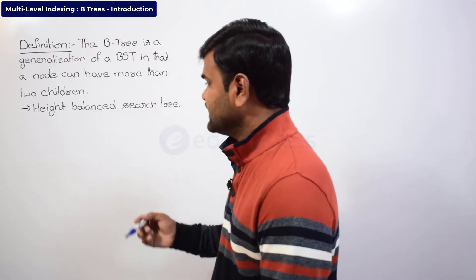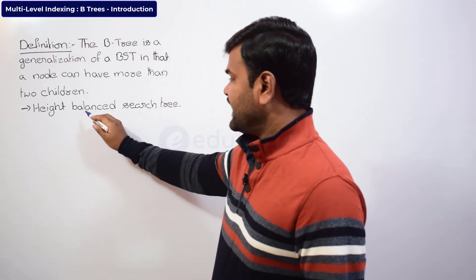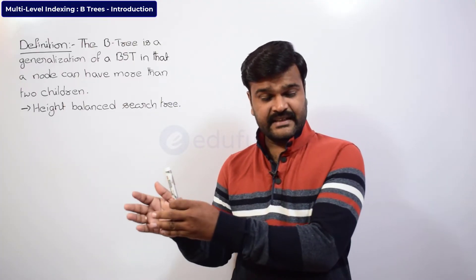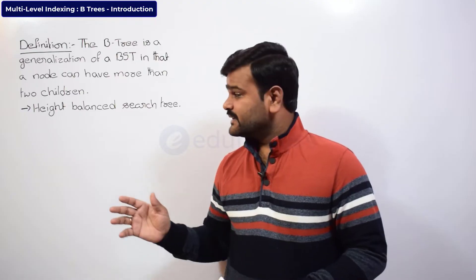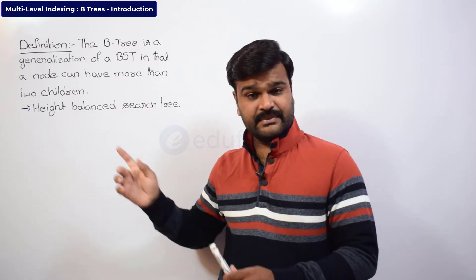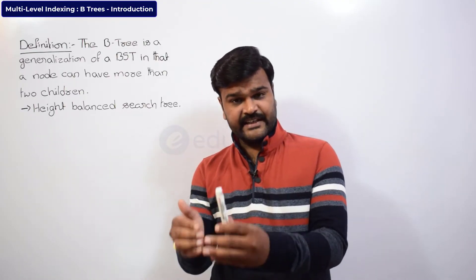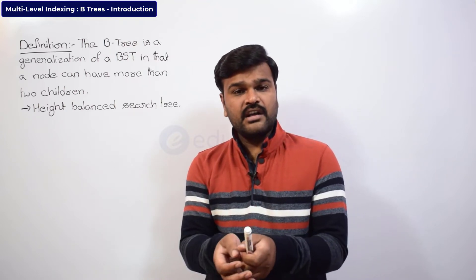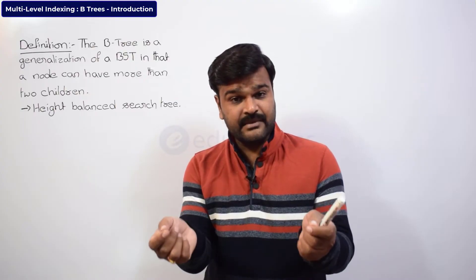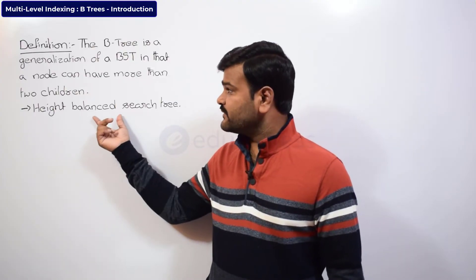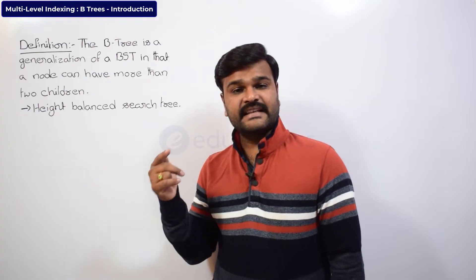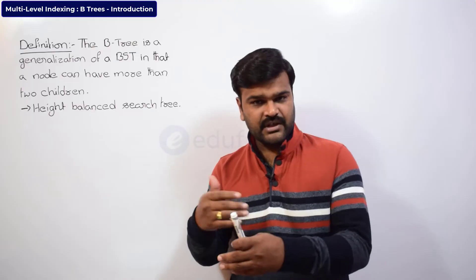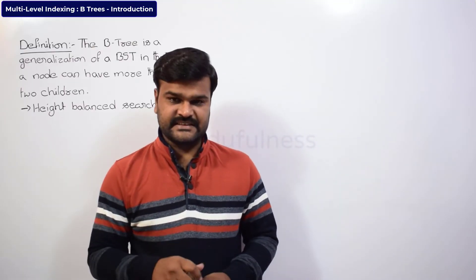Very importantly, a B-tree is a height-balanced search tree. Like a binary search tree, it is also a search tree, but it is height-balanced. A binary search tree is not height-balanced — it may be skewed, meaning all leaf nodes may not be at the same level. But in a B-tree, it is always guaranteed that all leaf nodes are at the same level.